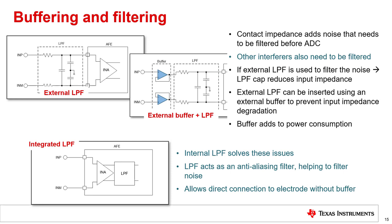As mentioned earlier, the contact impedance can be a source of additional noise, which needs to be low-pass filtered before conversion by the ADC. The electrodes can also pick up other interferers that need to be low-pass filtered. If the analog front end does not have an inbuilt low-pass filter, then it might be required to add an external low-pass filter between the electrodes and the ECG input pins. An addition of such an external low-pass filter can result in a lowering of the input impedance of the ECG signal chain. To introduce the external low-pass filter without reducing the input impedance, an external buffer may be required. The buffer adds to power consumption of the overall system and is another source of noise. An internal integrated low-pass filter between the instrumentation amplifier and the ADC solves these issues. The low-pass filter acts as an anti-aliasing filter for the ADC, helping to filter out-of-band noise. With the low-pass filter integrated into the chip, a direct connection to the electrode is possible without the need of an external buffer.